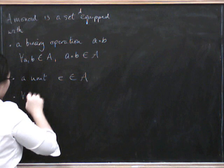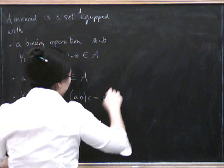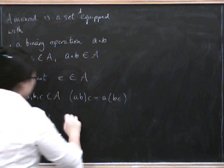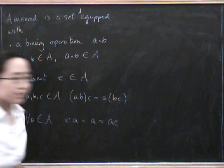So we've got for all A, B, and C in A, A composed with B composed with C equals A composed with B composed with C. And also for all A in A, E composed with A, E multiplied by A equals A equals A composed with E.